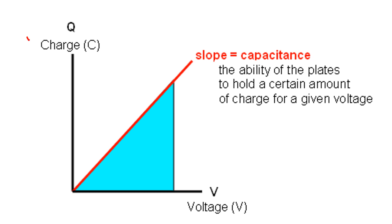Once again, the slope of a charge stored in a capacitor versus the voltage across a capacitor is just equal to the capacitance, or the ability of the plates to hold a certain amount of charge for a given voltage. Another very important quantity that we could derive from the charge versus voltage graph of a capacitor is the energy stored, and that is related to the area under the graph.